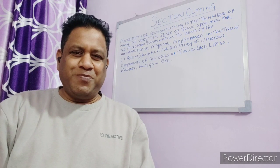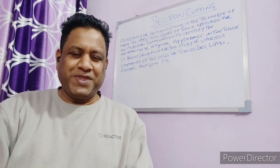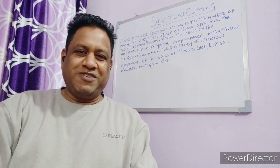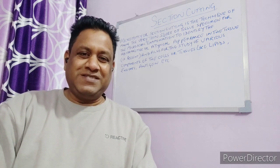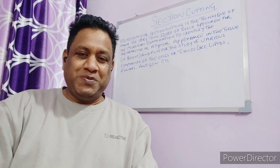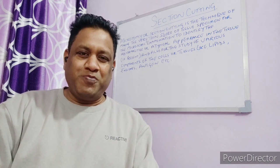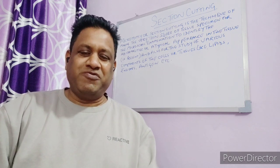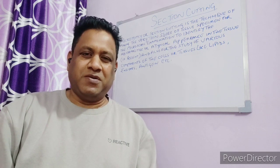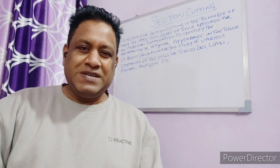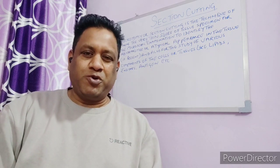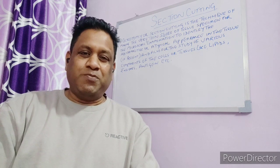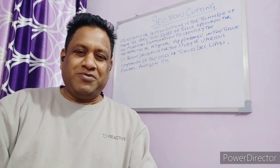Hello students, welcome back to my channel, Professor Ajee's Lecture. Today I'm here to discuss one of the most important procedures that takes place in the histopathology lab — that is microtomy. This procedure is conducted through the microtome, a very important instrument in the histopathology lab. There are various types of microtomes available: rotary microtome, freezing microtome, sliding microtome, and more. Today I'm talking about the rotary microtome, and the procedure is section cutting.